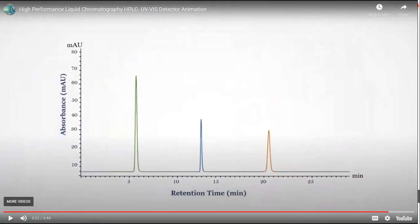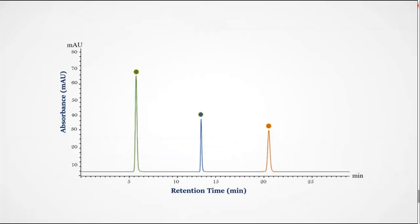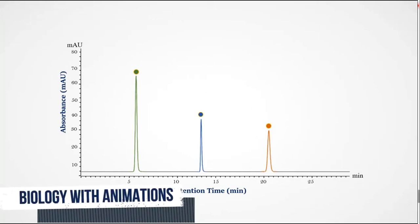The final output of HPLC is called a chromatogram. The x-axis shows retention time in minutes and the y-axis shows absorption in milli-absorption units (delta A). For example, a peak appearing between the fifth and sixth minute indicates a compound eluting at that time. Based on the peak surface area, the software calculates how many picograms, nanograms, or micrograms of the substance are present in the sample.